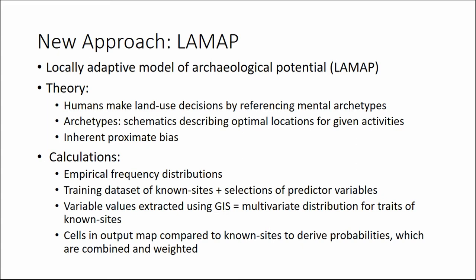These archetypes are basically schematics depicting optimal locations for given activities — whether it's clay sourcing, flint knapping, building a homestead, or a campsite. There's an inherent proximate bias in this: you're not thinking of the best campsite possible globally, but what is best in your immediate area. This proximate bias is accounted for in the model. The basis is empirical frequency distributions, starting with a training dataset of all known sites, their locations, periods, sizes, and a selection of predictor variables.